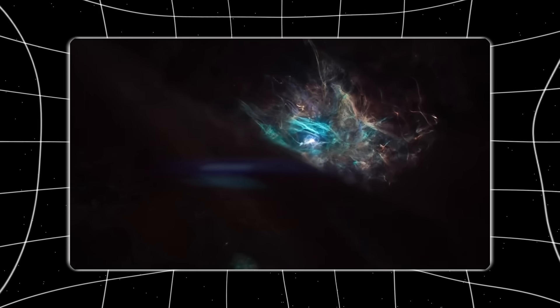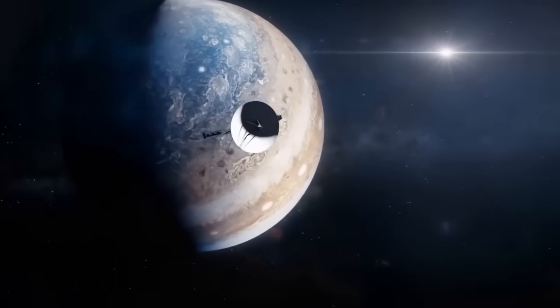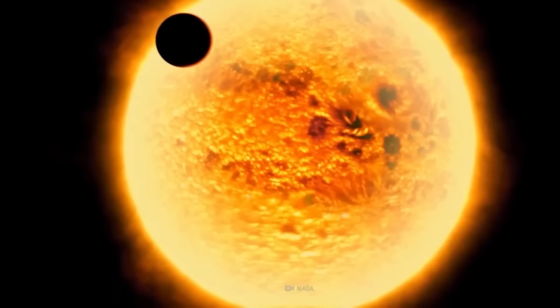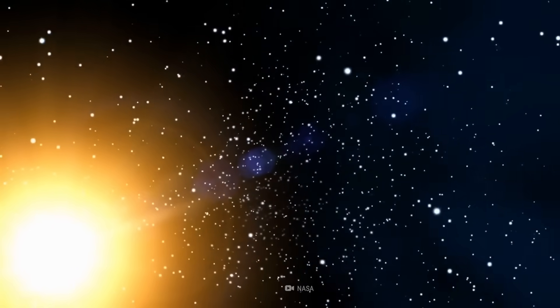This implies that the heliosphere does not end cleanly. Instead, it fades into a region of interaction where solar and galactic influences overlap and compete. In other words, the solar system does not simply stop. It dissolves.